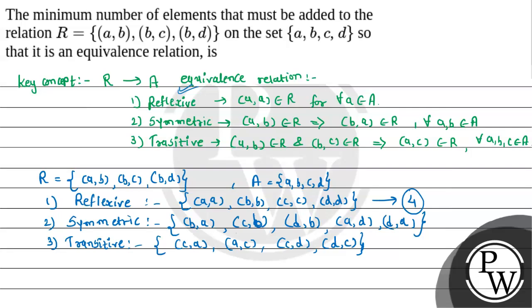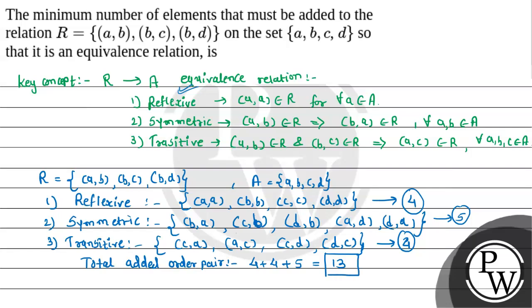So here, the total reflexive order pairs to add will be 4, total symmetric order pairs will be 5, and total transitive order pairs will be 4. Therefore, the total order pairs that must be added is 4 + 5 + 4 = 13. So 13 is the final answer.